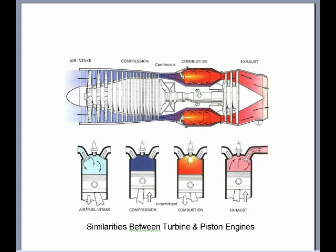If we look at the gas turbine engine, it has many similarities to any other heat engine, especially the reciprocating piston engine. Both the piston and the turbine engine operate by air intake, compression, power, and exhaust cycles. Except all four cycles happen simultaneously on the gas turbine engine, whereas all four cycles happen intermittently on the piston engine. The gas turbine engine operates on constant pressure combustion, whereas the gas piston engine operates on constant volume combustion.